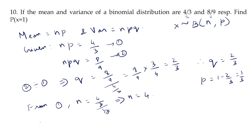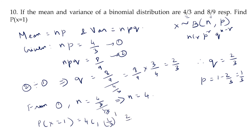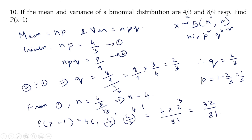Now we can find P(X = 1). P(X = r) = nCr · p^r · q^(n−r). Here n = 4, r = 1, p = 1/3, q = 2/3. So P(X = 1) = 4C1 · (1/3)^1 · (2/3)^3 = 4 · (1/3) · (8/27) = 32/81. Therefore P(X = 1) = 32/81.